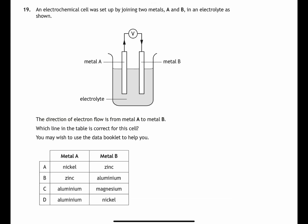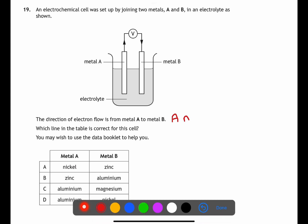For question nineteen we're looking at electrochemical cells. Two metals A and B are joined together, and electrons are flowing from A to B — this means metal A is more reactive than metal B. Use page 10 of the data book, the electrochemical series: the metal higher up is more reactive. Comparing the options given in the table, aluminium is more reactive than nickel, and therefore D is the answer.